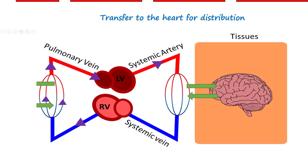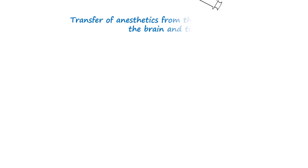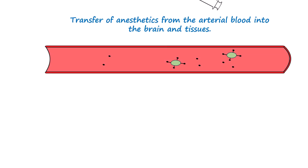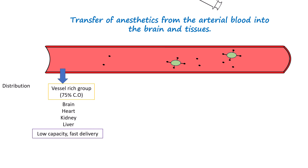The drug is carried in venous blood to the right side of the heart and then to the left side through pulmonary circulation. From there, the drug is distributed to various tissues of the body, including the brain, through systemic circulation. Highly perfused organs like the brain, heart, liver, and kidneys receive it quickly. The brain equilibrates quickly due to its high perfusion and lipid content, resulting in rapid induction of anesthesia.